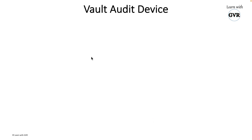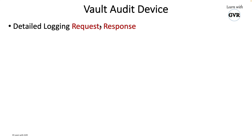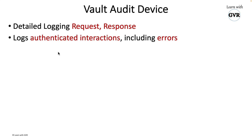When you enable a Vault audit, it will log the request and response — note these two. It logs request and response for any authentication interaction, including errors. For example, if I log into Vault with the wrong token, that wrong token request and the response — whether it's a 503 error, 401 unauthenticated, or whatever error — everything will be logged including errors.